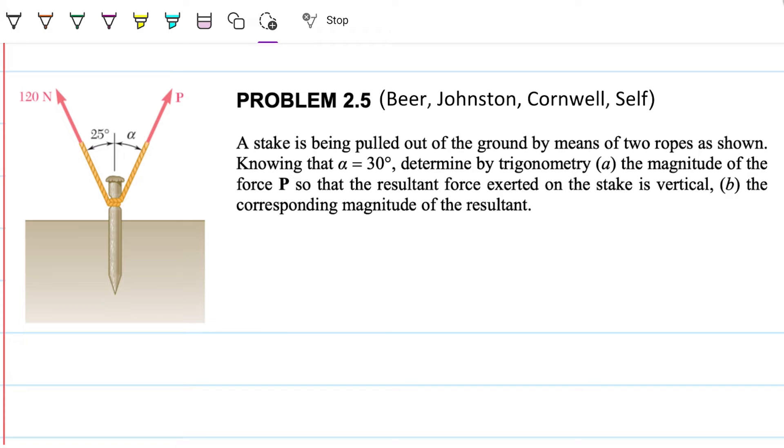Let's start with the force decomposition method. So problem statement reads, a stake is being pulled out of the ground by means of two ropes as shown, knowing that alpha is 30 degrees determined by trigonometry A, the magnitude of the force P so that the resultant force exerted on the stake is vertical and B, the corresponding magnitude of the resultant.